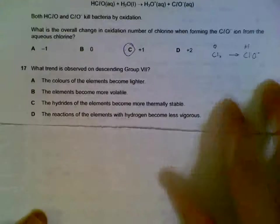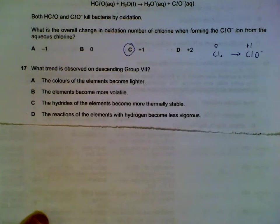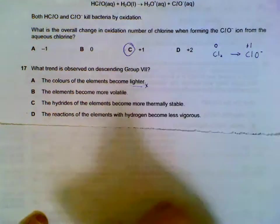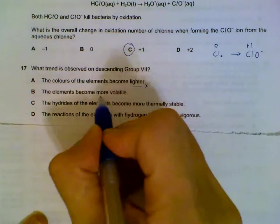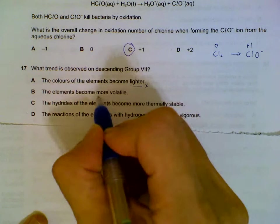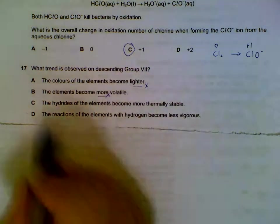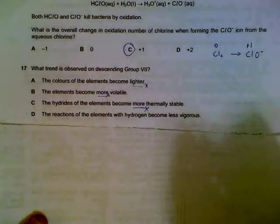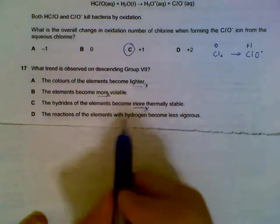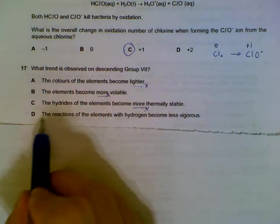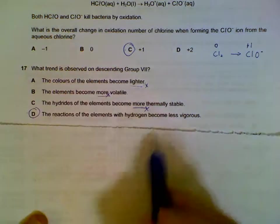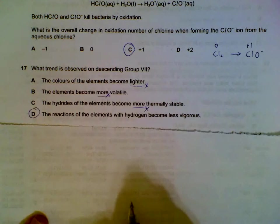Question 17: trend for Group 7. As you go down the group, the elements become darker, the elements have a higher boiling point and are less volatile, the hydrides become less stable, it's easier to break the bonds for the hydrides. The reactions become less vigorous, that's correct. It becomes less and less reactive as you go down the group.